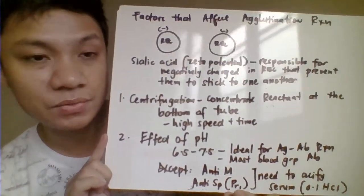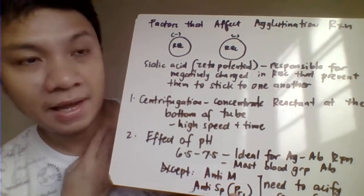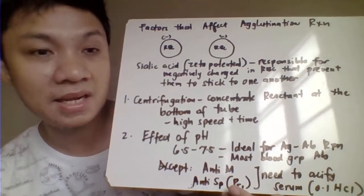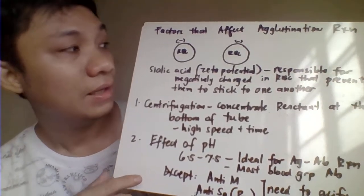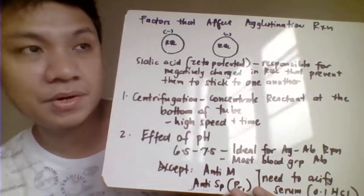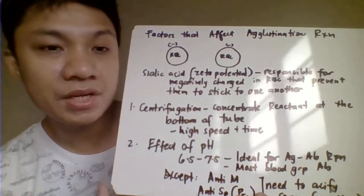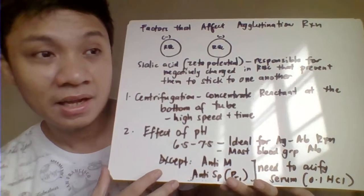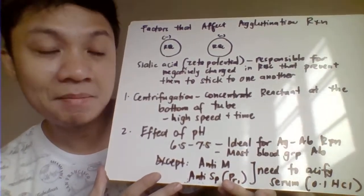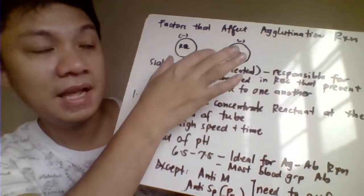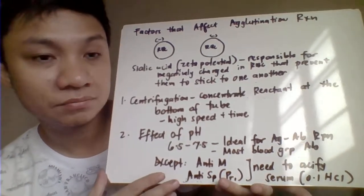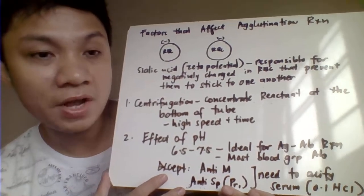Several factors affect agglutination reactions. The reactants involved are your antigen and your antibody. By nature, RBCs are negatively charged due to sialic acid, also called zeta potential. Because of this, RBCs in peripheral circulation do not stick to one another and flow freely. To allow an agglutination reaction, you need to destroy the zeta potential and allow RBCs to come closer together.